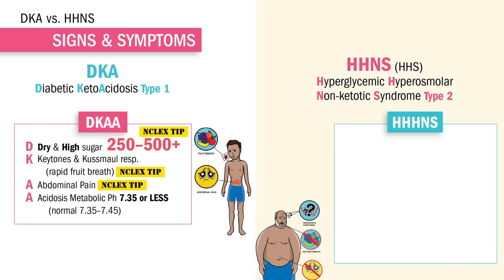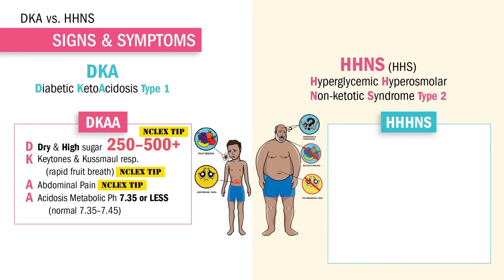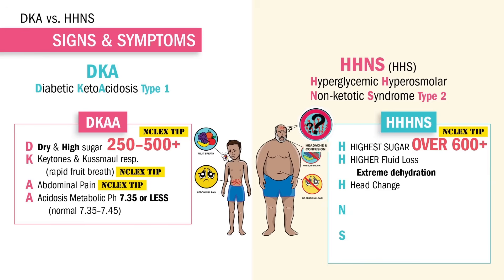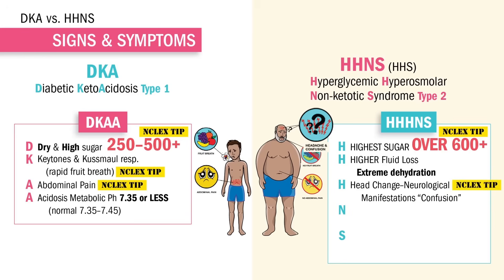Now switching over to type 2 — the slower and more serious one, since it's harder to fix. For HHNS, remember the triple H's. We have higher sugar loss with higher fluid loss — sugar over 600 plus and extreme dehydration. Our third H is for head change. The NCLEX term is neurological manifestations — write that down. We'll often see confusion with classic signs of HHNS. We don't get neurological manifestations with DKA.